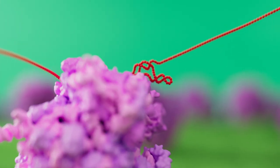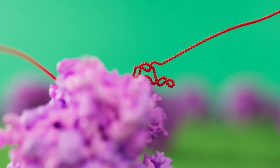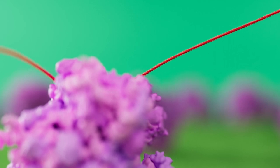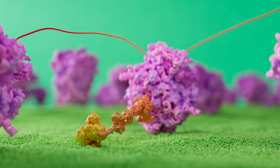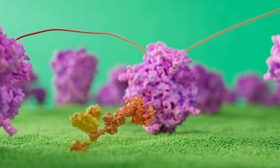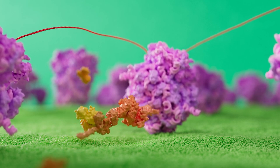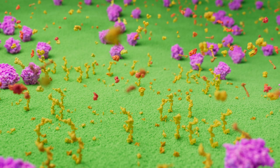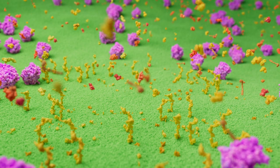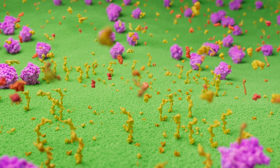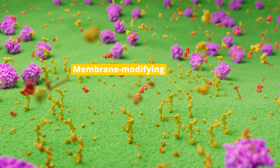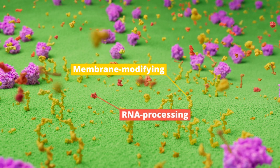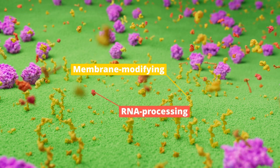The protein production can either stop here, or the knot in the viral RNA can slip, allowing the remaining viral RNA to be read. Because of the knot, the translation of the viral RNA often stops prematurely. This is an ingenious way for the virus to control how many proteins are being made – more of the membrane-modifying NSPs from before the knot, and fewer of the RNA-processing NSPs from after the knot.